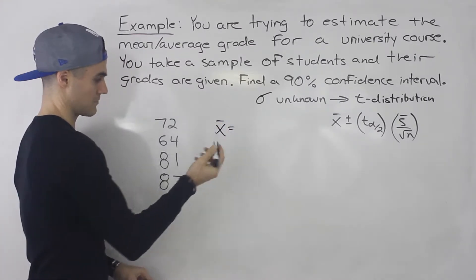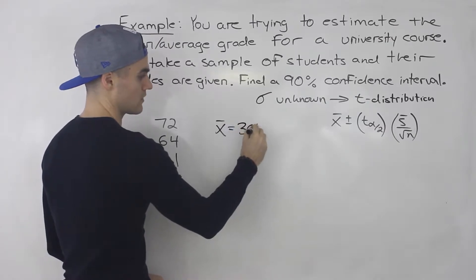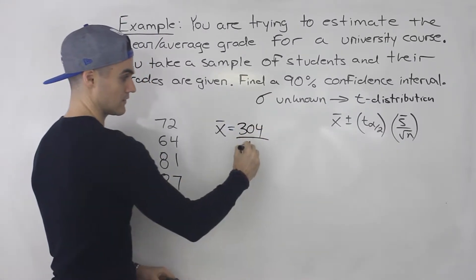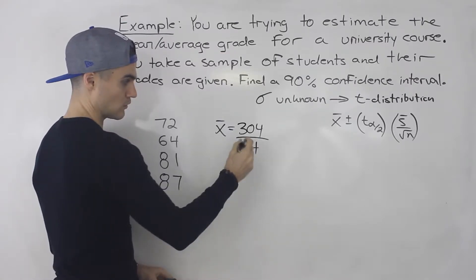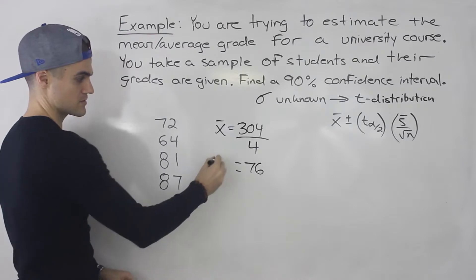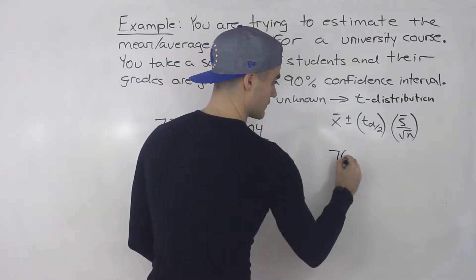So x bar is the sample mean. Basically you sum all of these up, you would end up getting 304. And then divided by the sample size, which is 4 in this case. So 304 divided by 4, that would give us 76. So that is the sample mean. So this here is going to be 76.